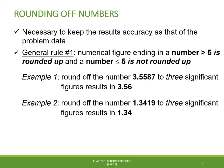Likewise, if we round 1.3419 to three significant figures, the fourth digit is 1, which is less than 5, so we do not round the previous digit up, resulting in 1.34.